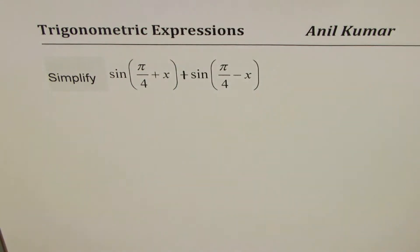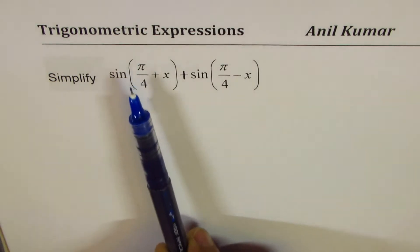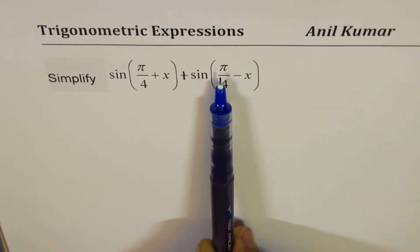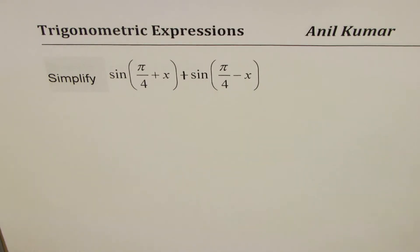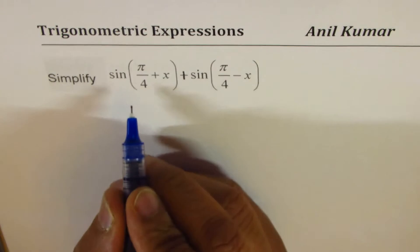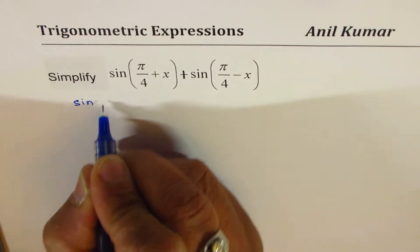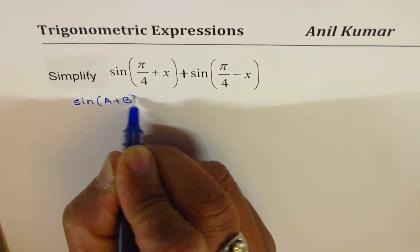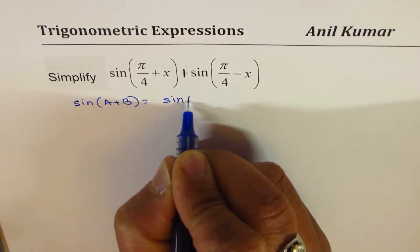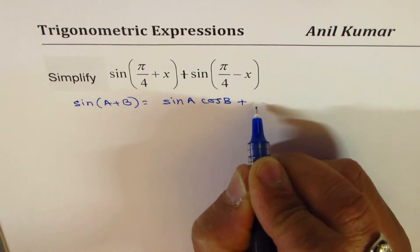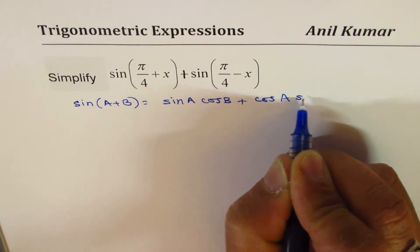We'll begin with a very interesting one, which is sine(π/4 + x) plus sine(π/4 − x). To simplify, you have to remember the compound angle formula, which is sin(a + b) = sin a cos b + cos a sin b.